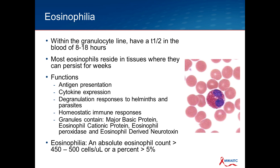The eosinophil is within the granulocyte cell line. It has a plasma or blood half-life that is around 12 hours, but the cells last much longer than that. They reside mostly in tissues where they can live for many weeks. They have a variety of functions that include presenting antigens and a lot of cytokine expression that are usually anti-inflammatory, as opposed to cytokines from other cell types.